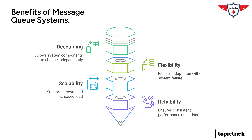Another big advantage is scalability. As the system grows and the number of messages increases, message queues can handle the load without breaking a sweat — they can handle those busy dinner rushes. It's like having a buffer that absorbs spikes in activity and keeps everything running smoothly. Message queues are also designed to be very reliable: they store messages safely until they are successfully processed. Even if a consumer encounters an issue or goes offline temporarily, the message remains safe in the queue waiting to be processed when everything is back up and running.